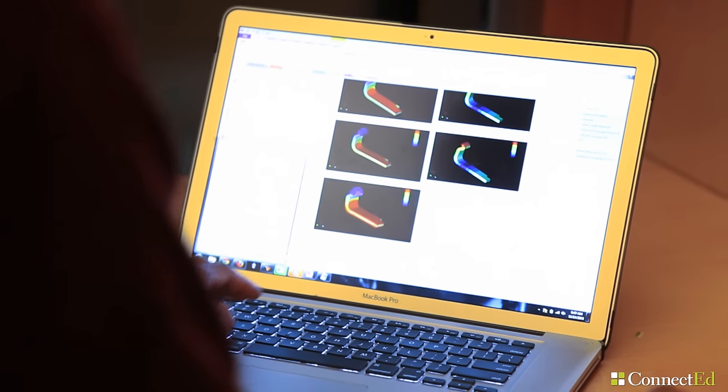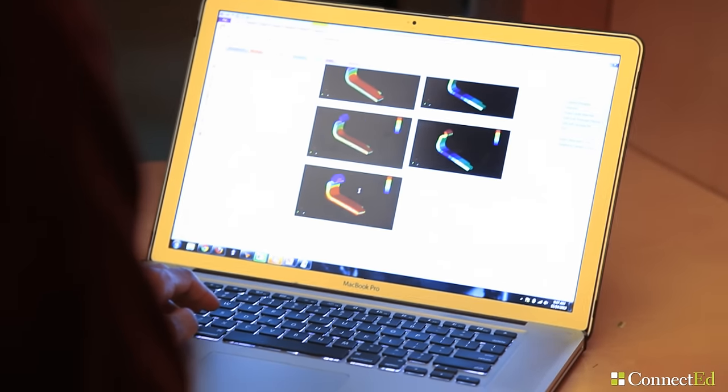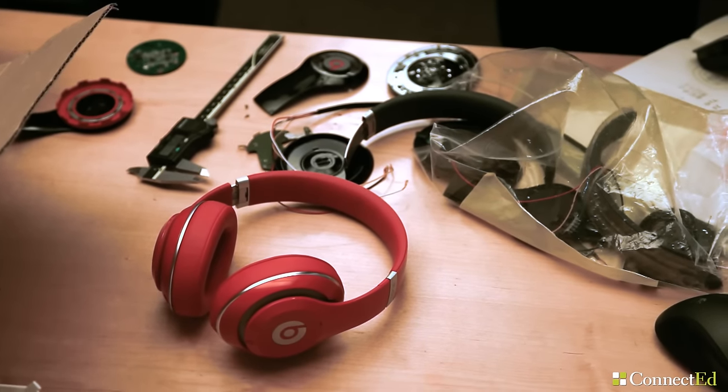Then taking these prototypes, testing them, breaking them, figuring out where the faults are. We iterate and do more prototypes. This phase constantly goes throughout almost the entire development cycle until you've completely finalized the product.